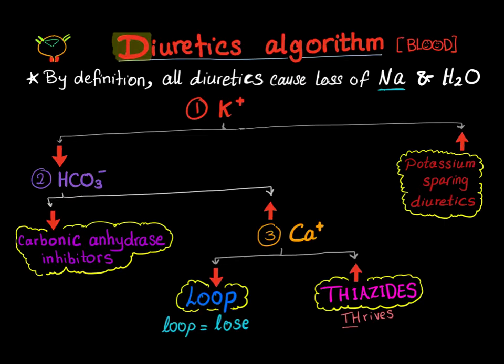First of all we have to define diuretics. Diuretics are drugs that you take to make diuresis — to cause you to urinate. So here is your urinary bladder. All diuretics cause loss of sodium and water. By definition, every diuretic will cause loss of sodium and loss of water, so all of the diuretics will lead to hyponatremia.